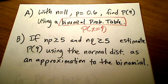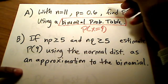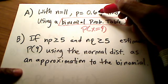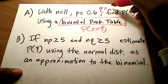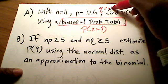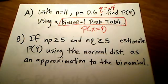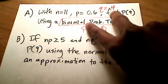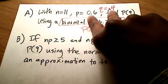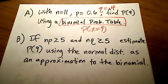They didn't tell you this, but you can probably assume that if the probability of success is 0.6, then the probability of failure is 0.4, because these two values are complements of each other.